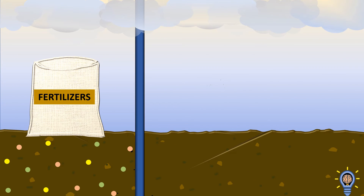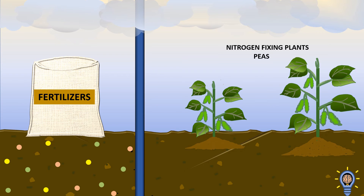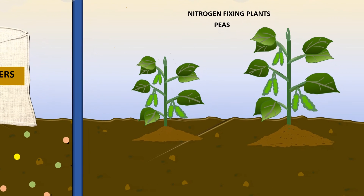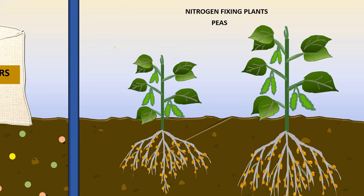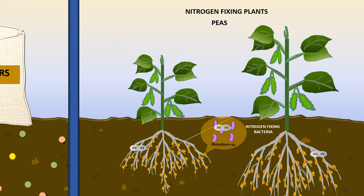The second method is by planting nitrogen-fixing plants such as peas, also known as leguminous plants. Legumes have these structures on their roots called root nodules. In these root nodules contain nitrogen-fixing bacteria such as the Rhizobium species. These bacteria help to convert the nitrogen molecule in the atmosphere into a usable form of nitrogen in the soil such as ammonia or ammonium.